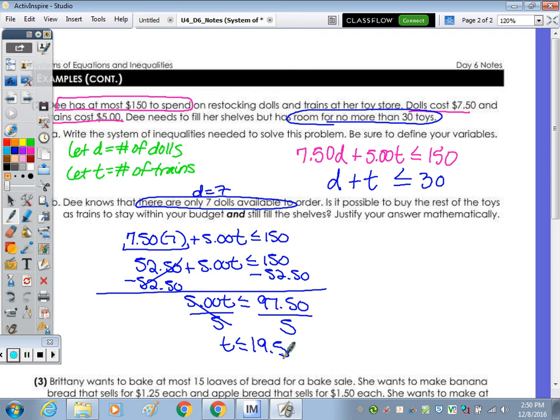Subtract we get 97.50. Divide by 5.00, T is less than or equal to 19.50. Well T represents the number of trains, so it's really 19 and a half. Can you buy 19 and a half? No. So the greatest value less than 19.5 would be, so if T was 19, the other inequality was that D plus T is less than or equal to 30.